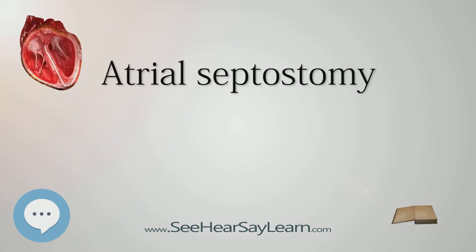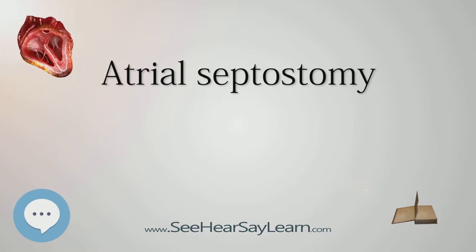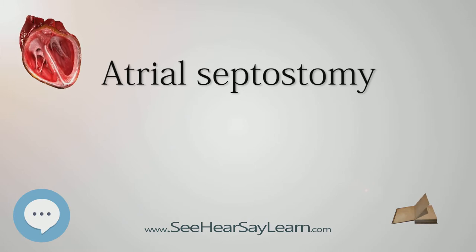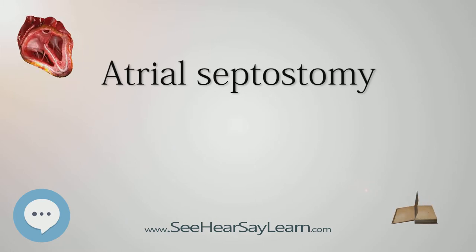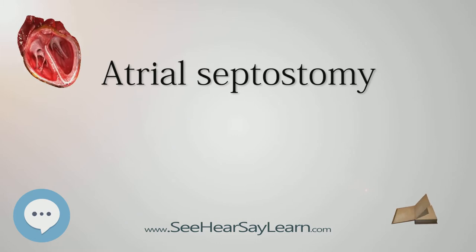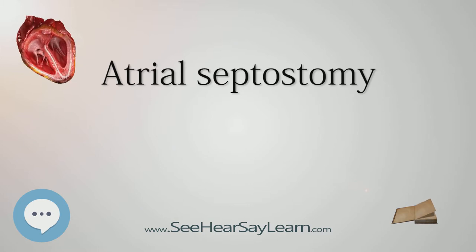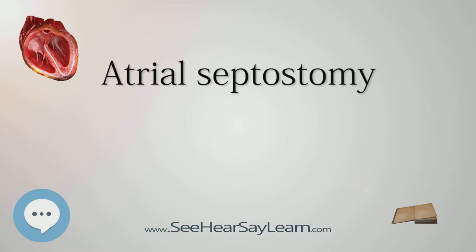Sometimes the initial surgery is not entirely successful, or other factors make a simple balloon atrial septostomy impossible — such as in an older patient whose foramen ovale has already closed. In these cases, a blade atrial septostomy is performed. The procedure is largely the same, except that a small blade on the end of the catheter is first used to create an opening between the right and left atria before the insertion of the balloon.